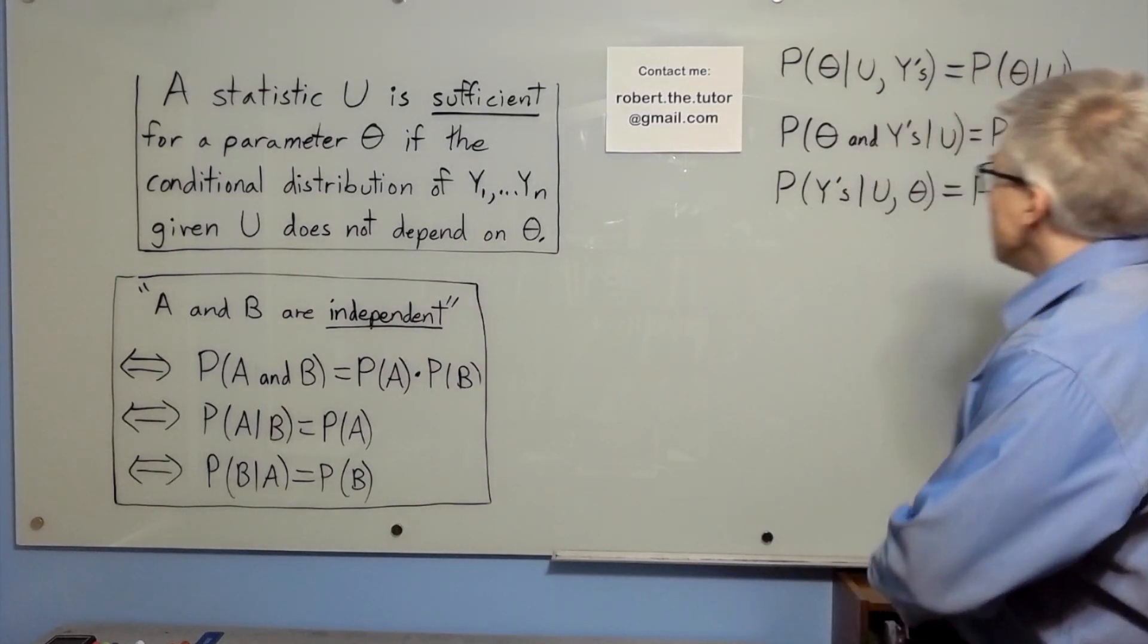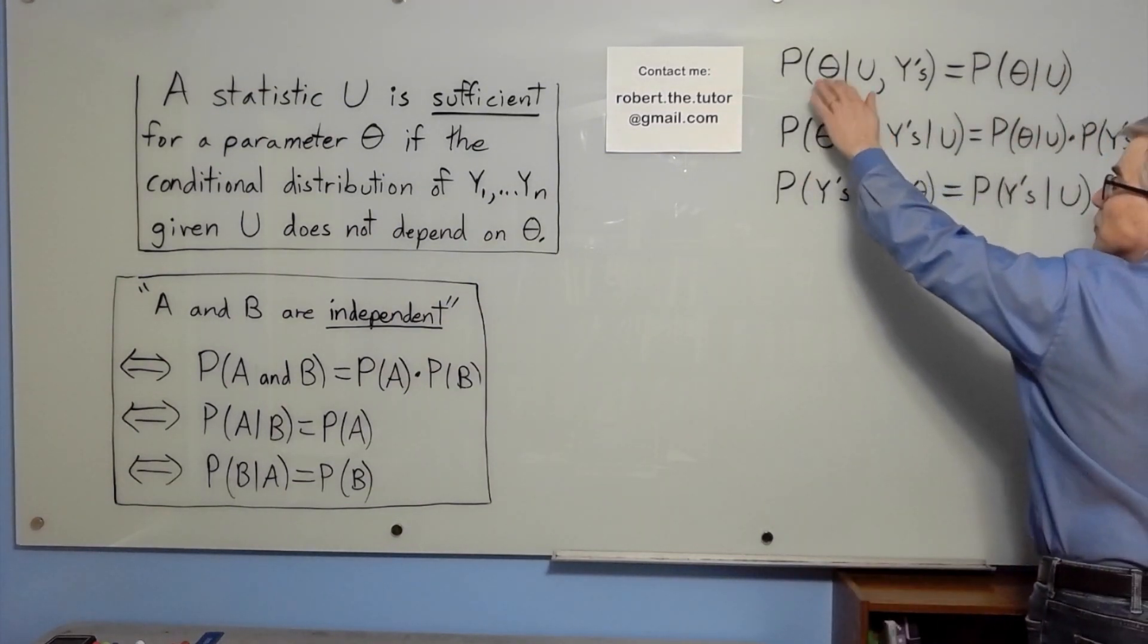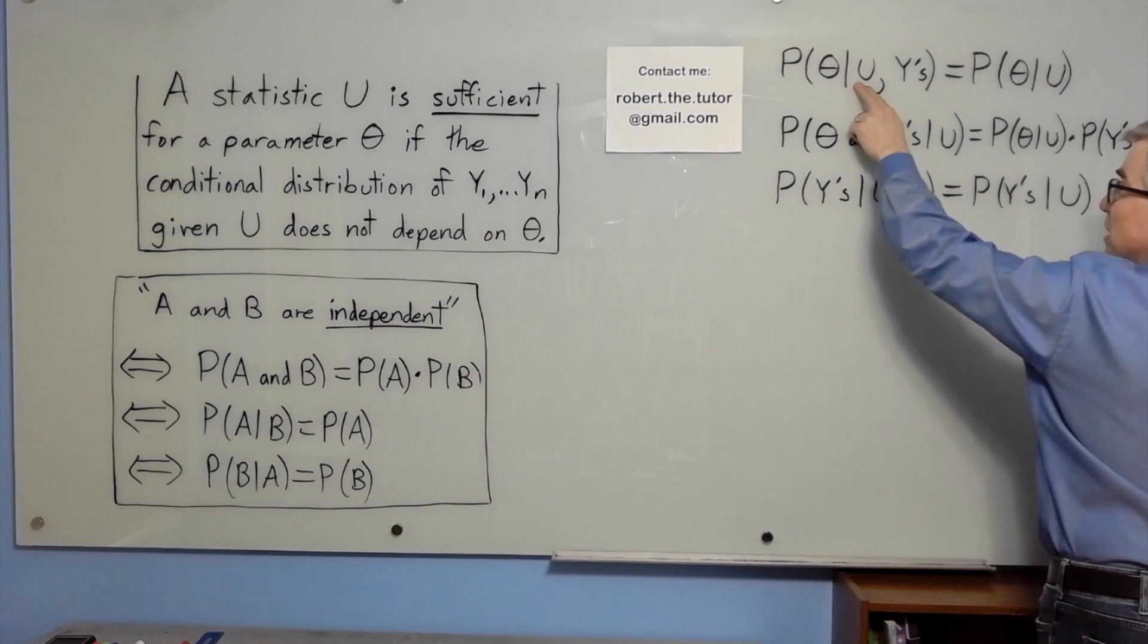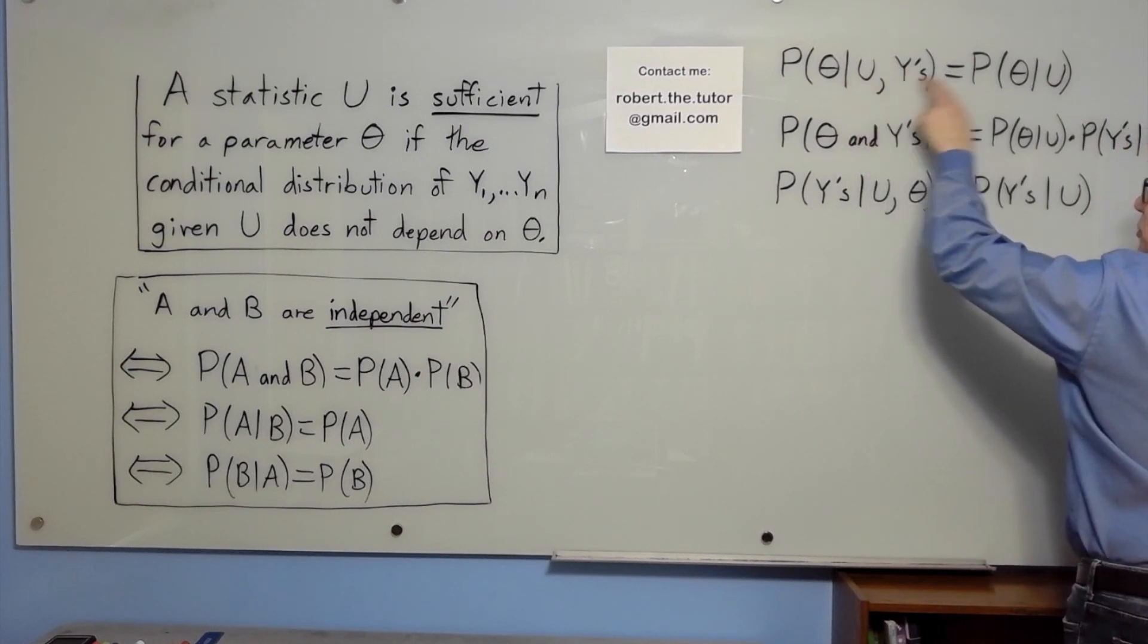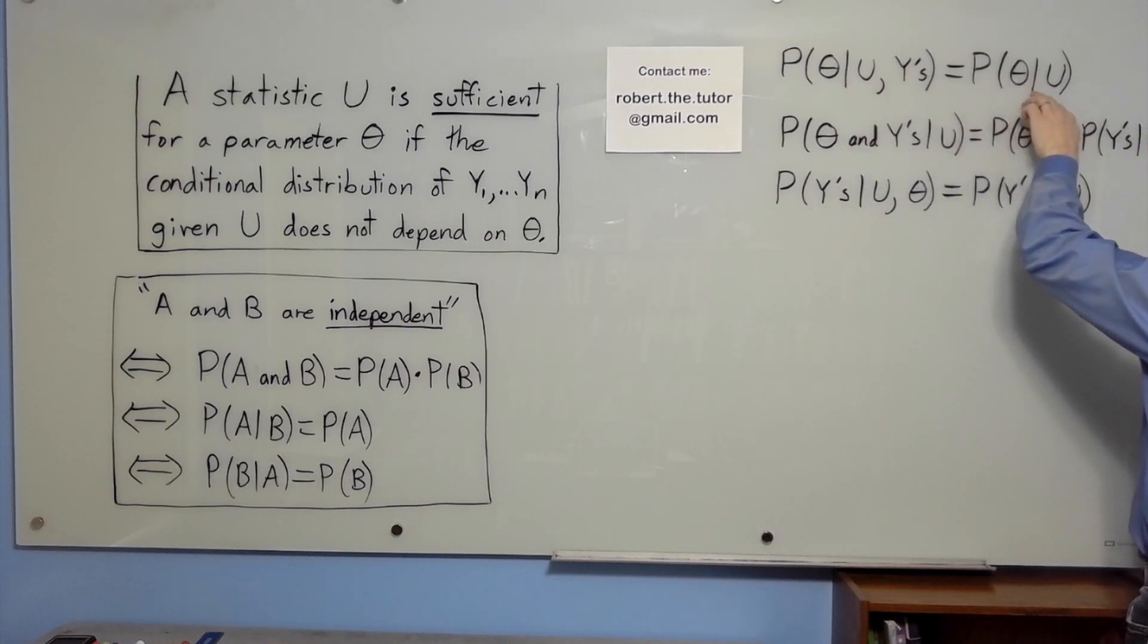But the probability of the parameter given the statistic and the data is just the probability of theta given the statistic. That's the intuitive one.